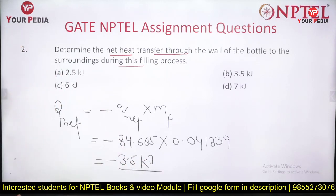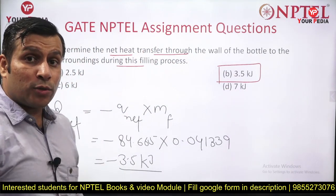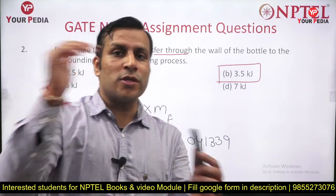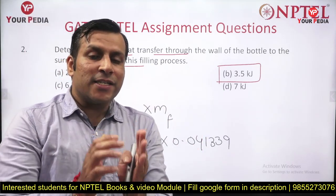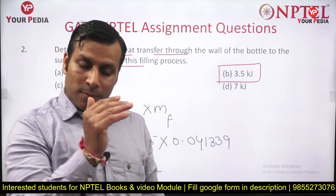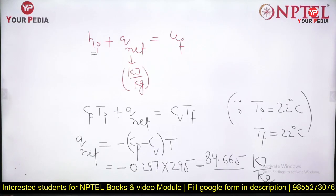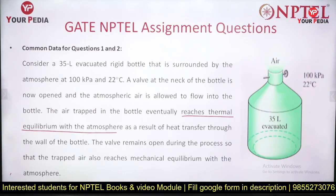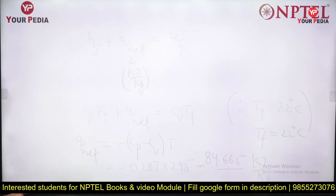Net heat transfer is 3.5 kJ. The direction of net heat transfer is from the system (bottle) to the surrounding — heat flows out of the bottle. I hope the concept and solution for this question is clear. We covered the basic concepts of unsteady state heat transfer, energy balance, and mass balance, and applied them to solve the problem.